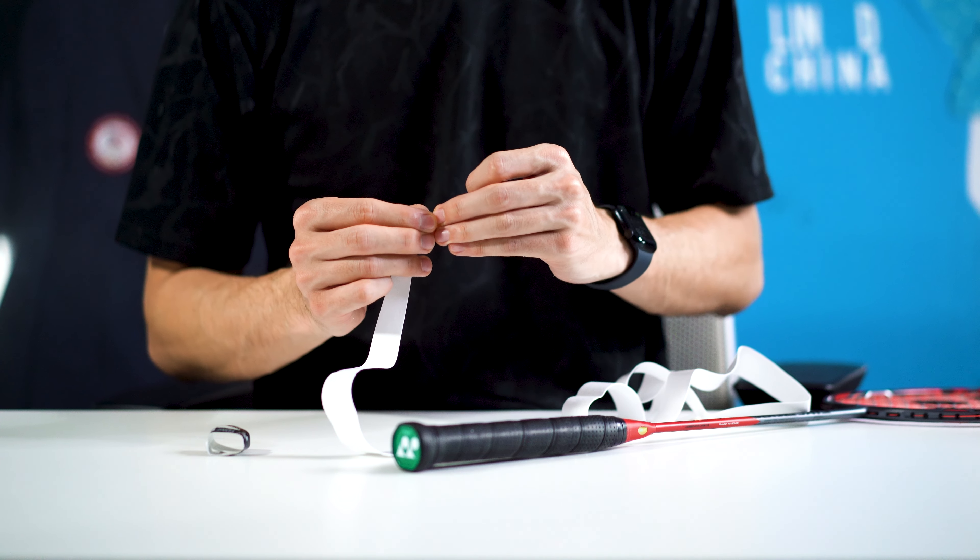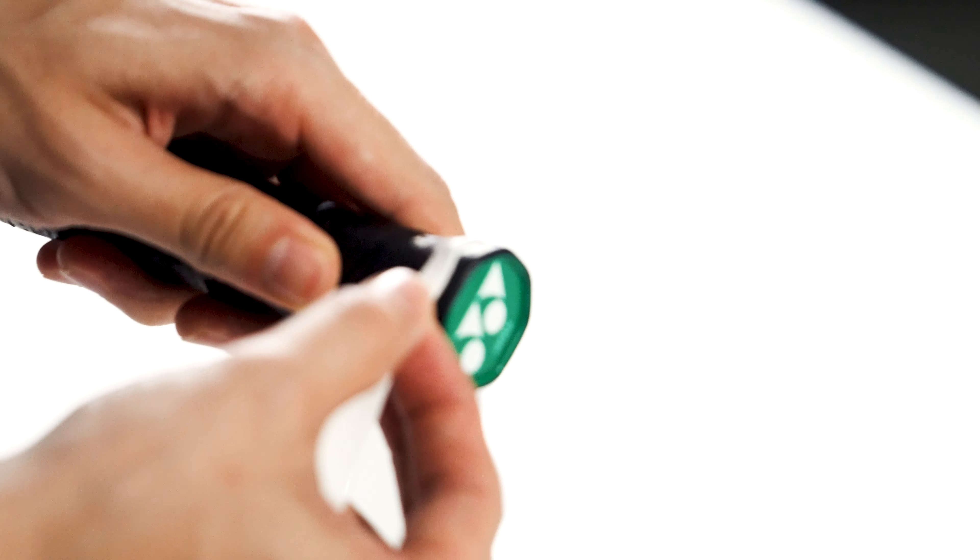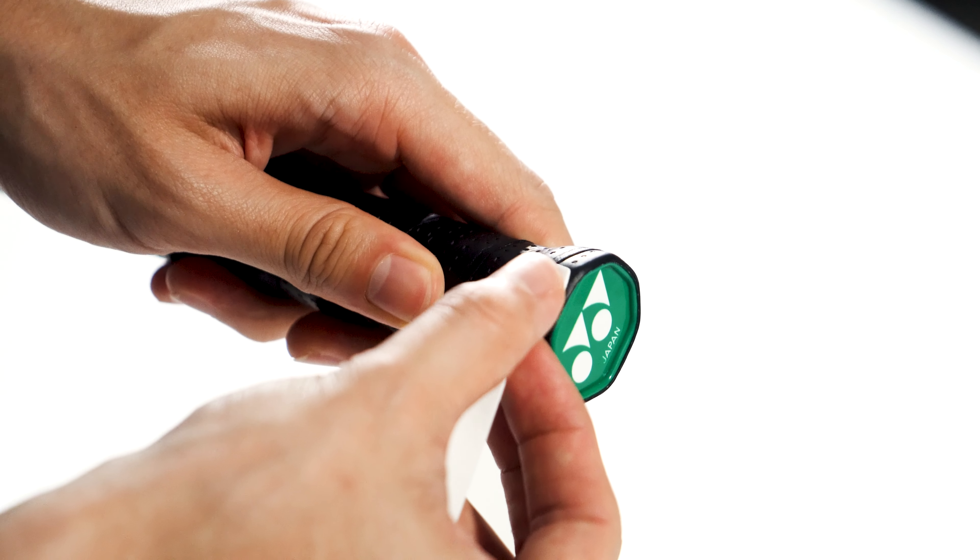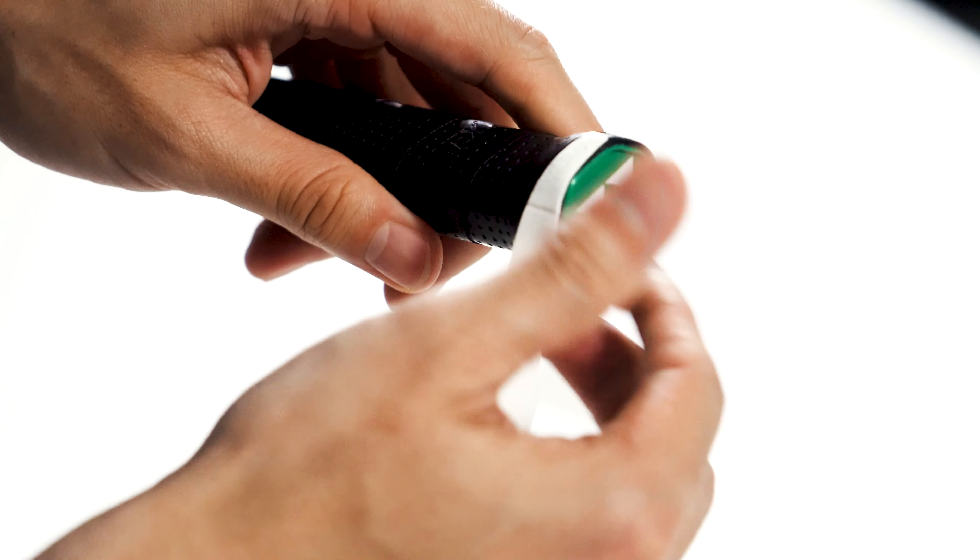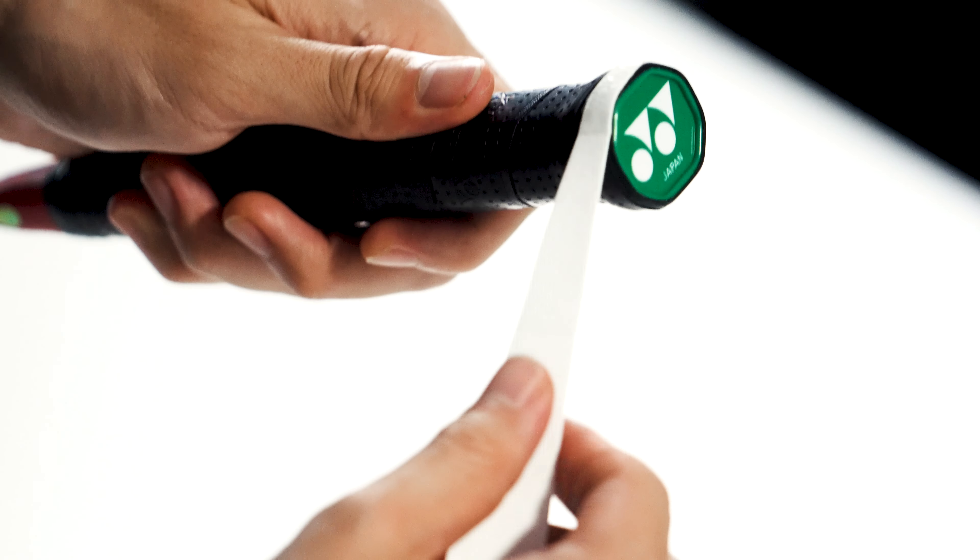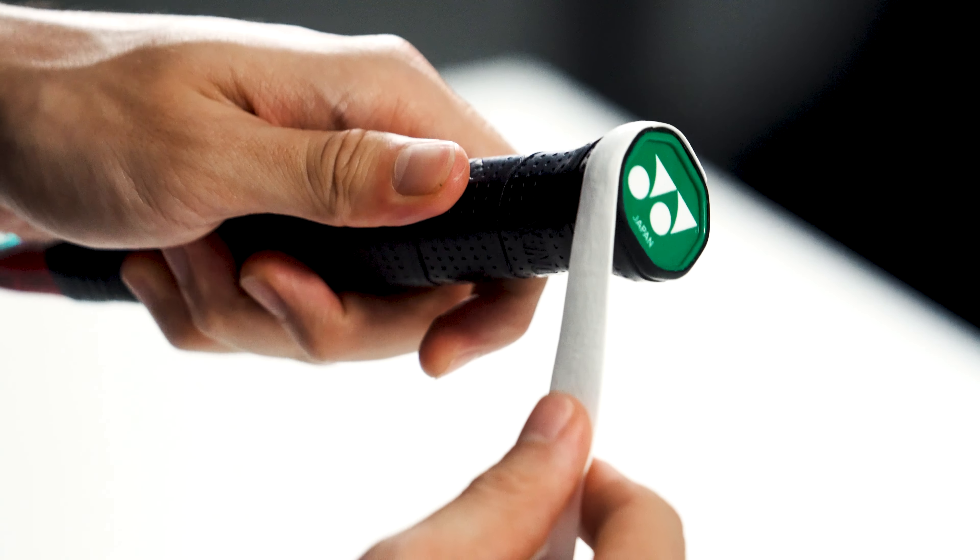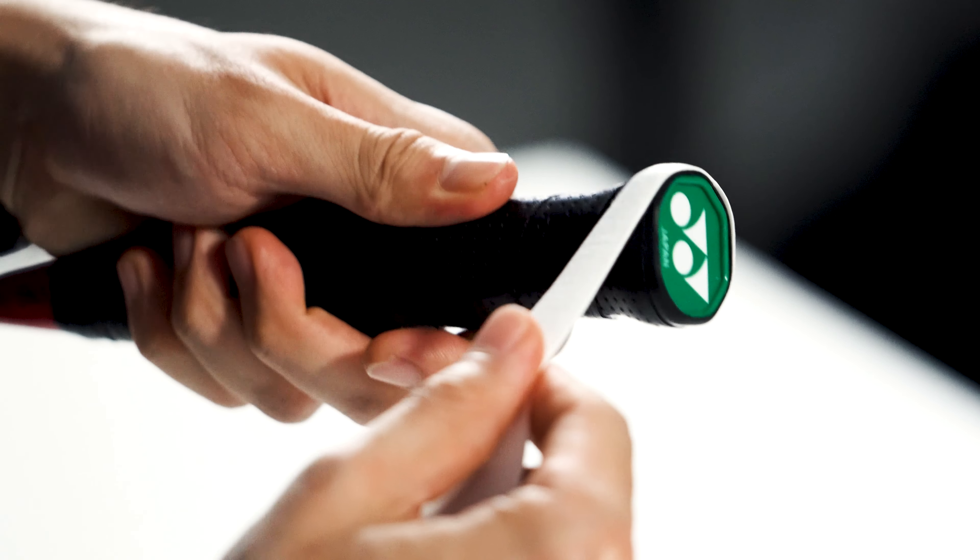Take off the little sticker and we're going to put it on the flat end of the grip right here. Line it up with the bottom of the racket. Once it's down I like to use my off hand to hold the grip and my right hand to pull and give it a bit of tension. I spin the handle as I go like this.